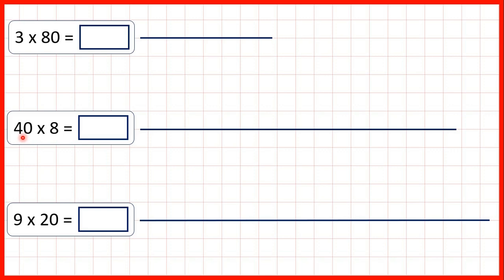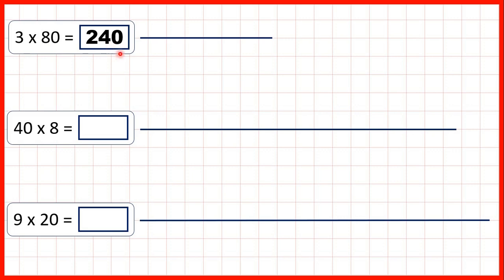For these questions, we need to multiply by a multiple of 10 — a number that ends in a zero. First, we have 3 times 80. That's 240, because if we know that 3 times 8 is 24, we know that 3 times 80 is 240 — that's 24 with a zero on the end. If we have an end zero in a multiplication question, there will be an end zero in our answer as well.